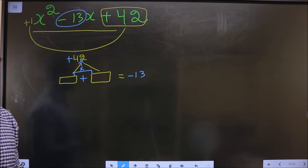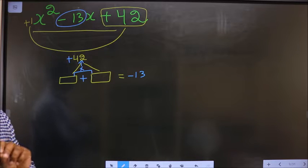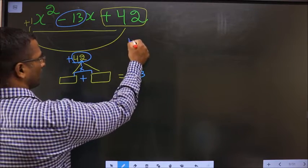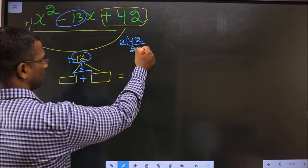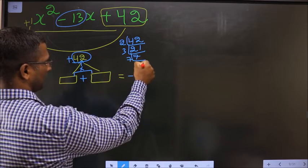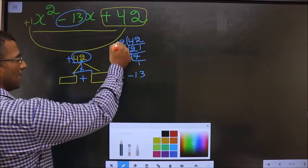By taking LCM of 42. So 42 LCM starting with 2, 2, 2, 2, 1, then 3, 7, and 7, 1. So the two numbers are 2 into 3 is 6 and the second number is 7.